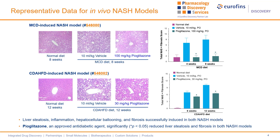The MCD NASH model is a well-established model for studying inflammatory and fibrotic processes involved in NASH and has been widely used in NASH drug research and development. The CDA high-fat diet NASH model is an improved model in which animals are able to maintain their body weight throughout the study. In both models, we use pioglitazone to validate the models and use it as a positive control in all of our studies. Pioglitazone is a PPAR-gamma agonist approved for type 2 diabetes, and is also in various clinical trials for NASH with good success. It is currently recommended by the American Association for the Study of Liver Diseases to treat biopsy-proven NASH patients with or without type 2 diabetes.